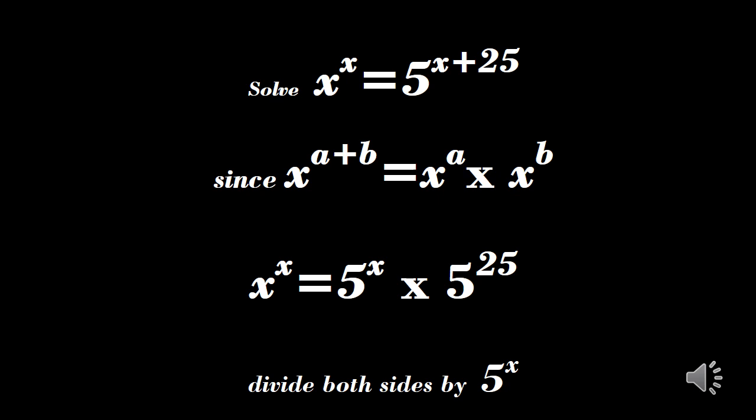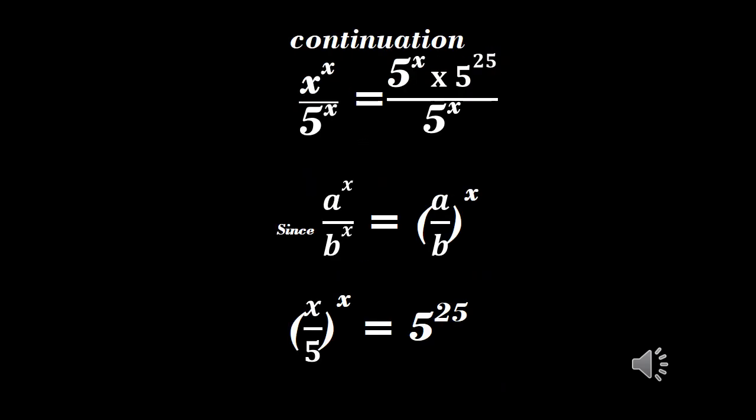Now if we divide both sides by 5 raised to power x, we have x raised to power x divided by 5 raised to power x equals 5 raised to power x times 5 raised to power 25 all over 5 raised to power x. The 5 raised to power x cancels, so we have x over 5, all raised to power x, equals 5 raised to power 25.